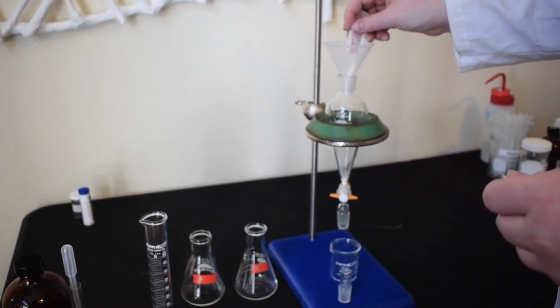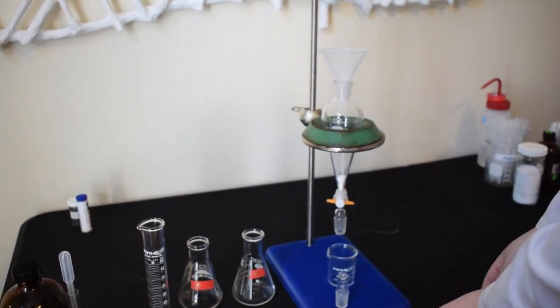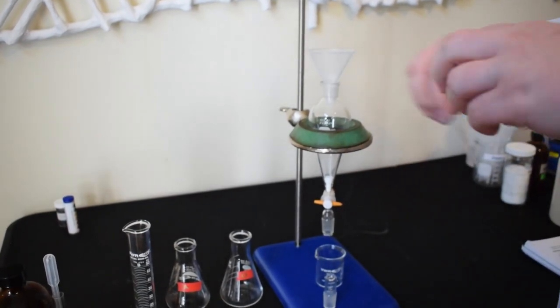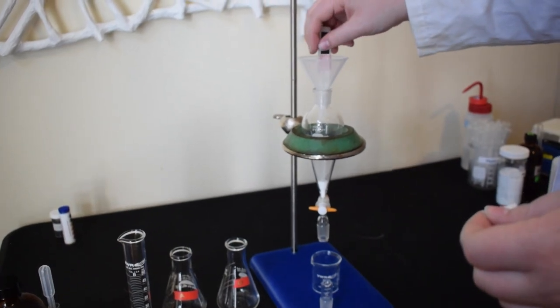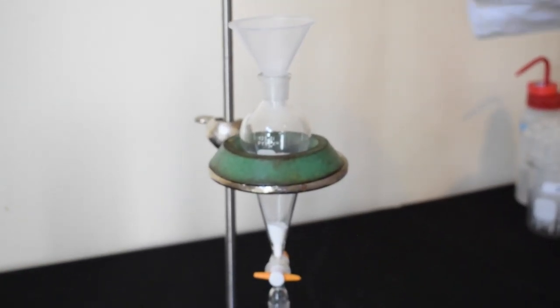So we're going to start by adding two packets of Goody's powder into our separatory funnel. Keep in mind for your theoretical recovery calculations that there are 500 milligrams of aspirin and 325 milligrams of acetaminophen per packet.